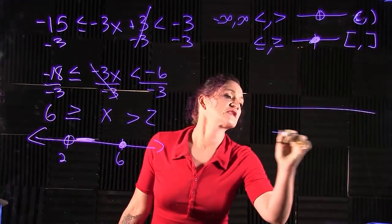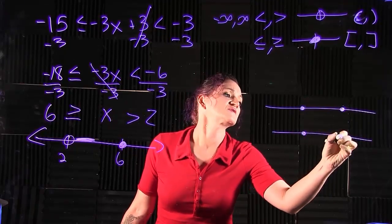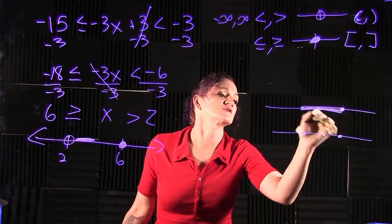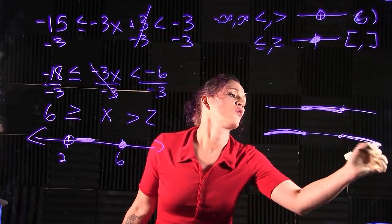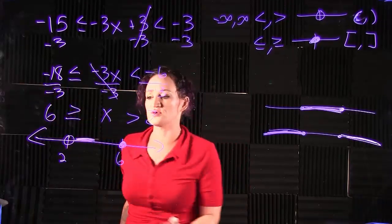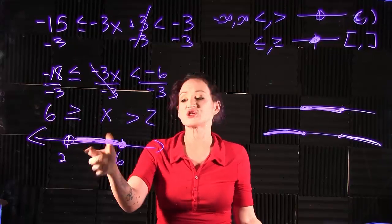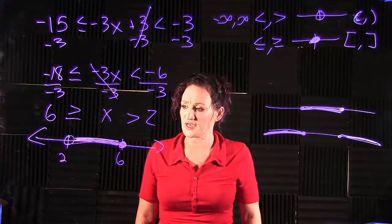When it comes to the shading, you have two options: you're shading in the middle or you're shading on the outside. We know that x needs to be greater than 2, which is to the right of 2, which means we're going to be shading the middle section, not the outside sections here.